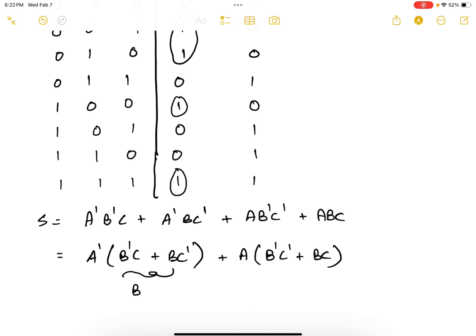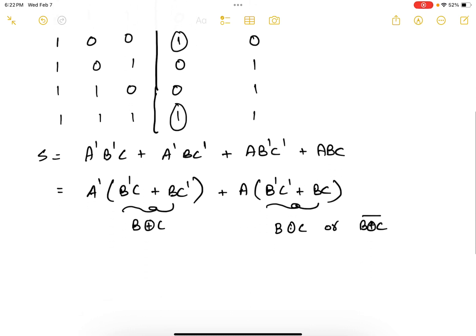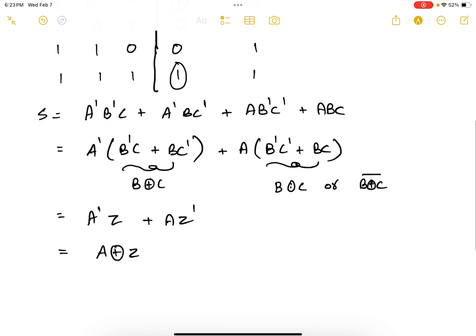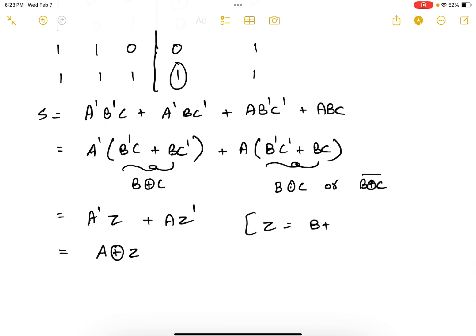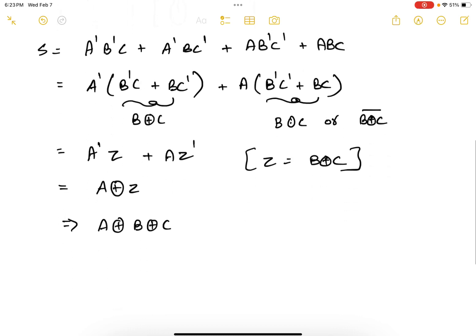Now if you see, this is B XOR C and this is B XOR C bar. Let me take B XOR C as Z. Therefore this becomes A' Z' plus A Z, which is nothing but A XOR Z. Let me write it here: Z equals B XOR C. Therefore if you substitute it back, S equals A XOR B XOR C.